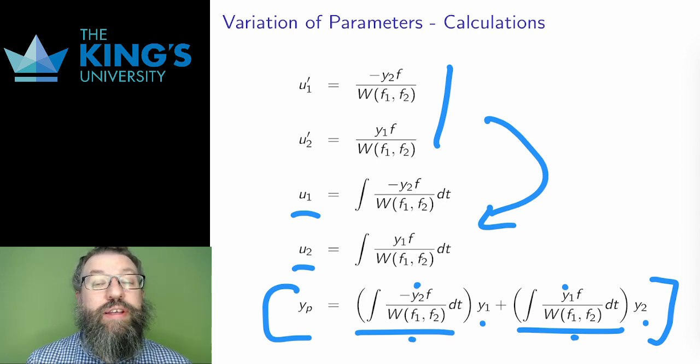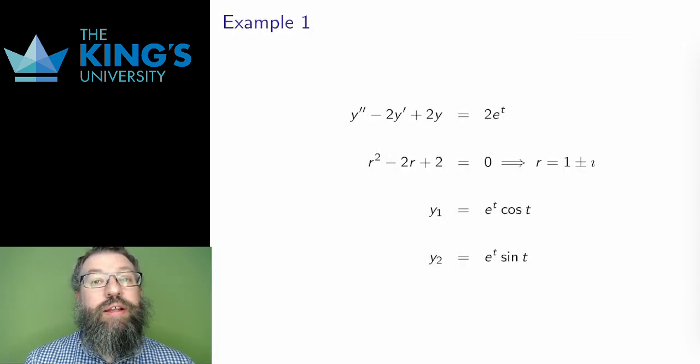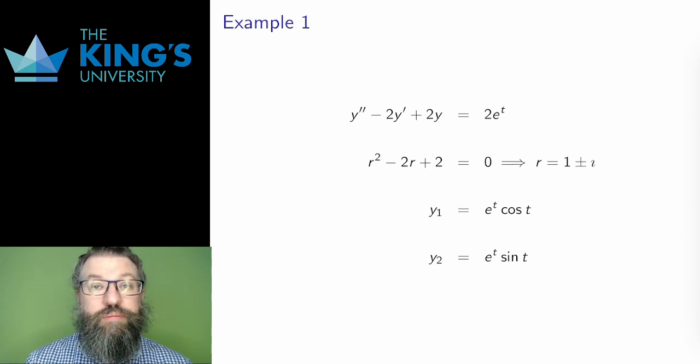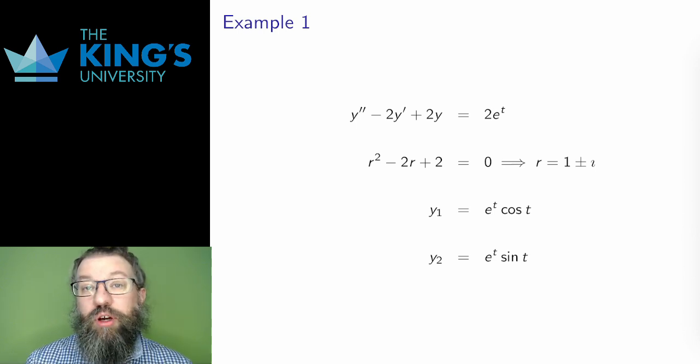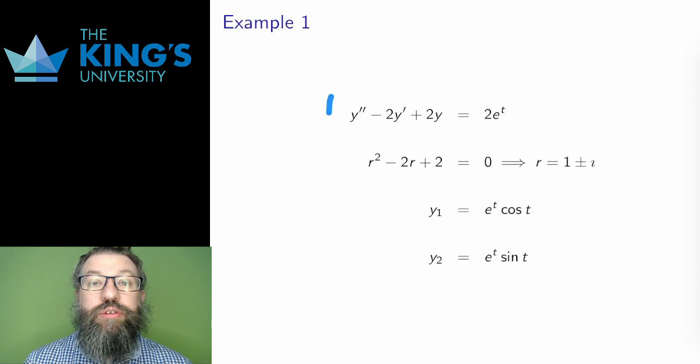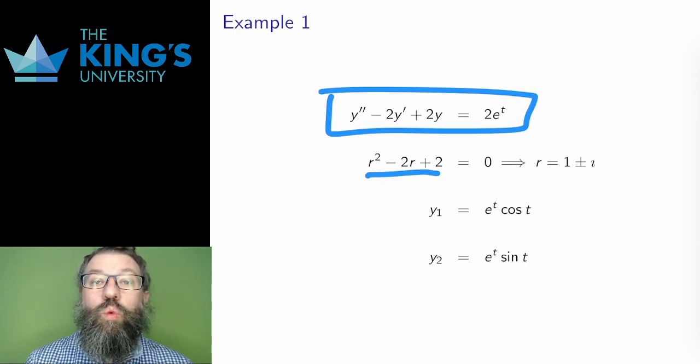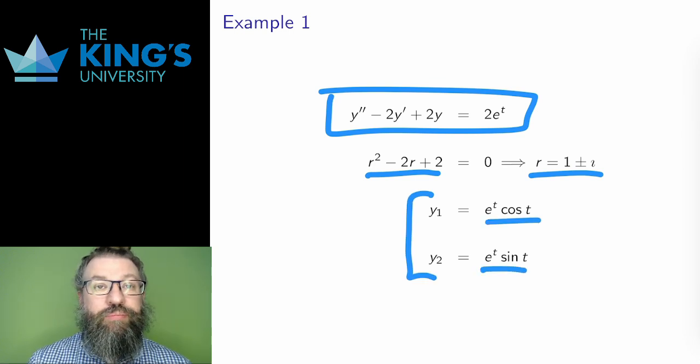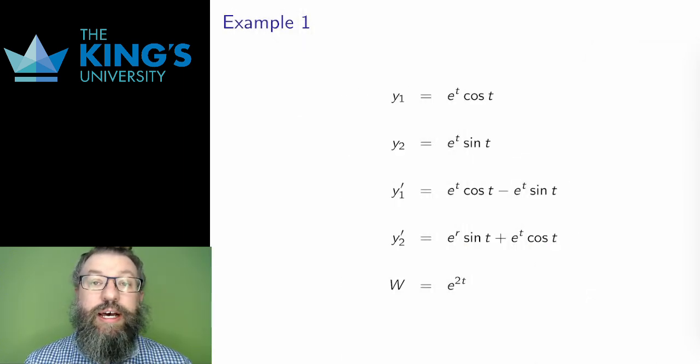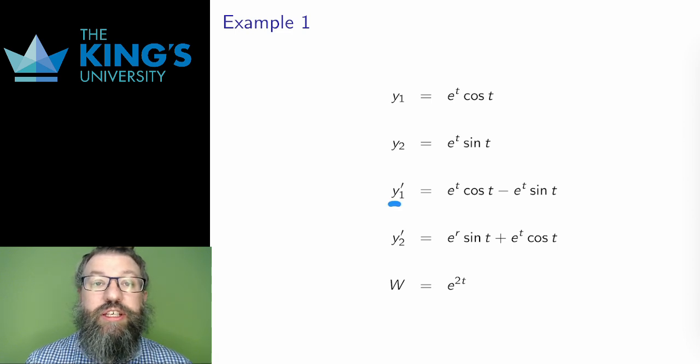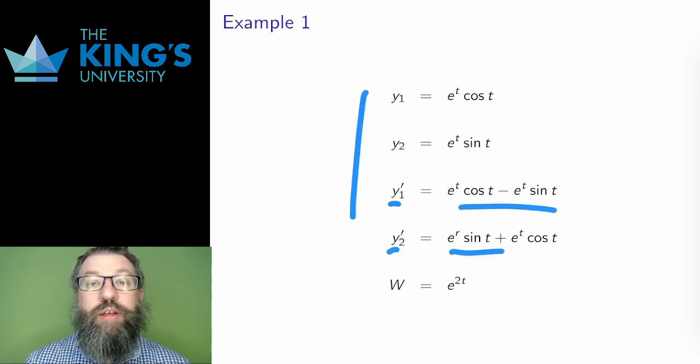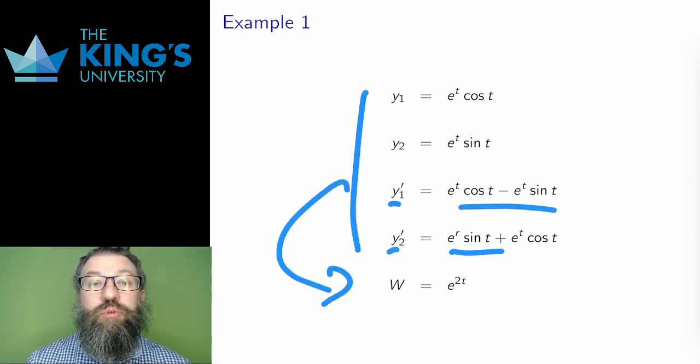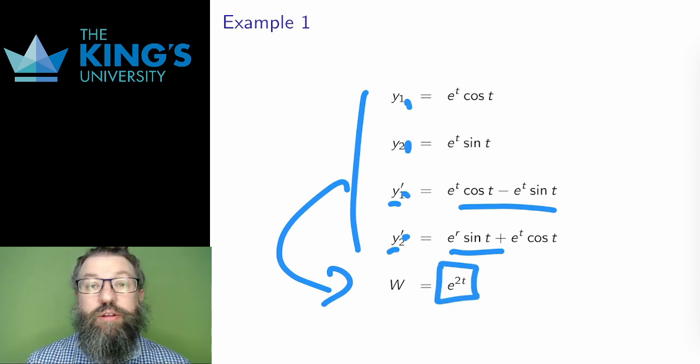So after all that heavy and complicated setup, let's actually do an example. You'll find the example's actually not too bad. Here's a DE and its characteristic equation. The roots are 1 plus or minus i, so the homogeneous solutions are e to the t cos t and e to the t sine t. Then I need the Wronskian. I calculate the derivative, and the Wronskian is just these two terms minus these two terms. This simplifies a lot due to sine squared plus cos squared equals 1, and the Wronskian works out to just e to the 2t.